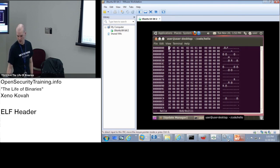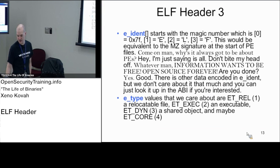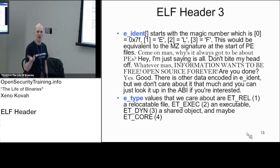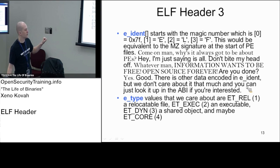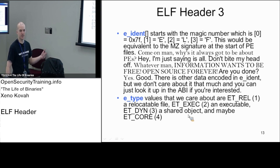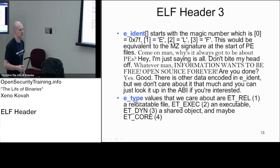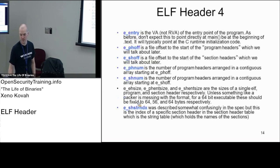The next thing is the type field. You can think of this type information as analogous to the characteristics on the file header back in Windows. It tells you: is this a relocatable file that will have relocations needing to be processed? Is it an executable file? Is it a dynamic or shared object file — essentially a DLL? Or is it a core dump? They actually reuse this format for core dumps from crashing programs. So you can think of the type field as like the characteristics from the PE file header.